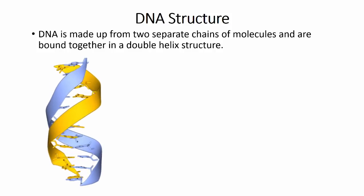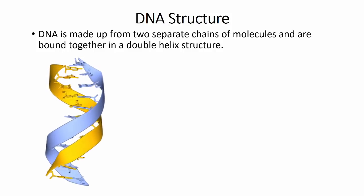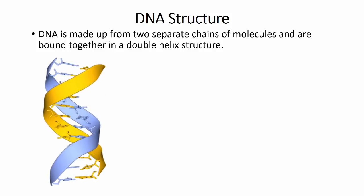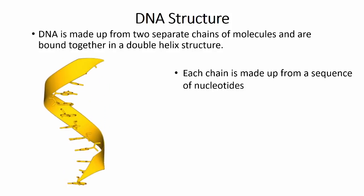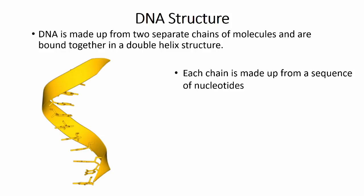This double helix structure is composed of two separate strands of DNA that are held together in the middle. Looking at just one of the two strands, we can see that they are made up of a chain of molecules. These molecules are called nucleotides, which we can see a representation of here.